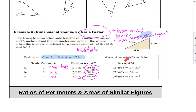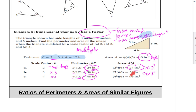Now for the area: the area of a triangle is base times height divided by 2, which gives us 6 square inches. But when we scale by a factor of 2, the area becomes 6 times 2 squared, which equals 24 — not just 6 times 2. With a scale factor of 3, it's 6 times 3 squared, which is 6 times 9, equaling 54.